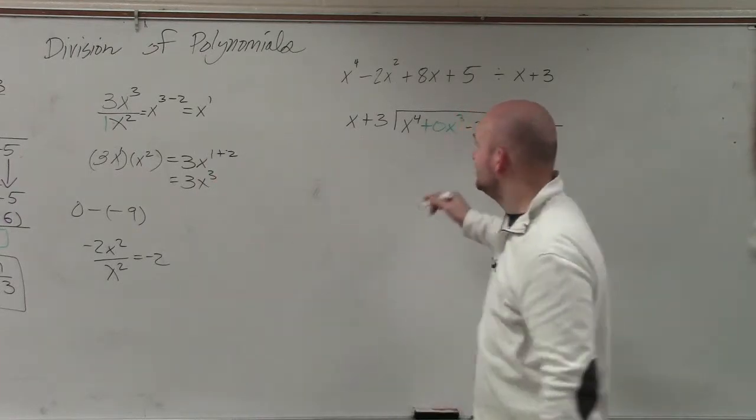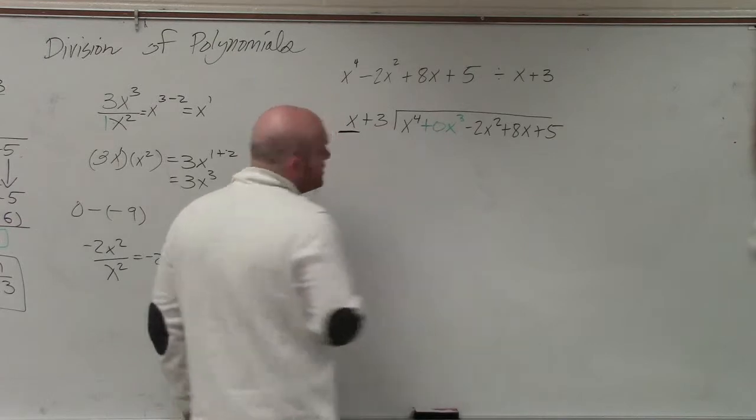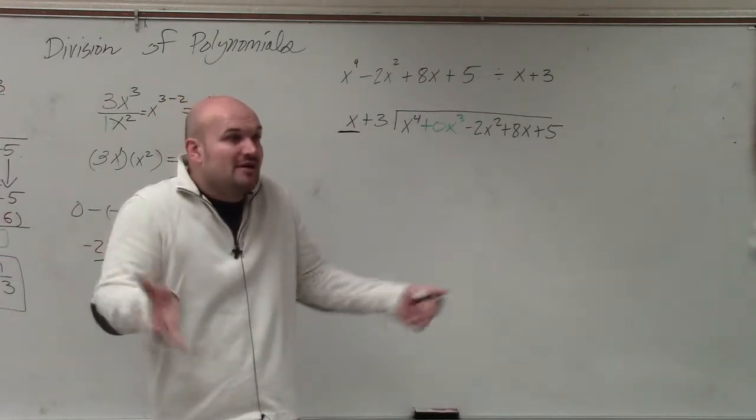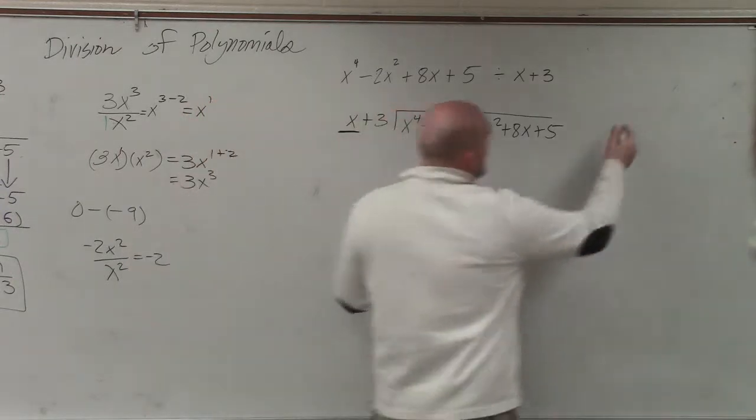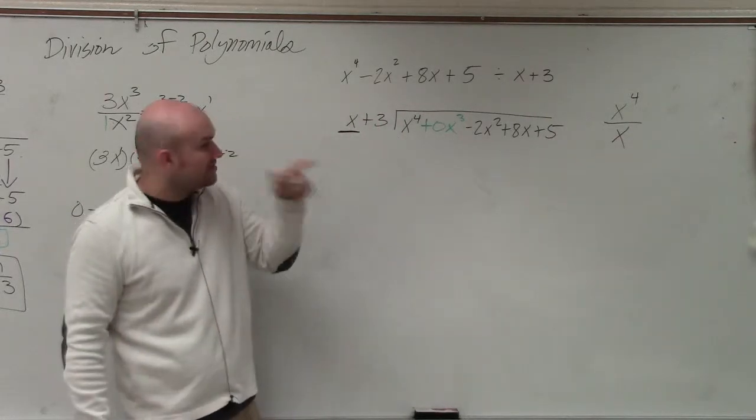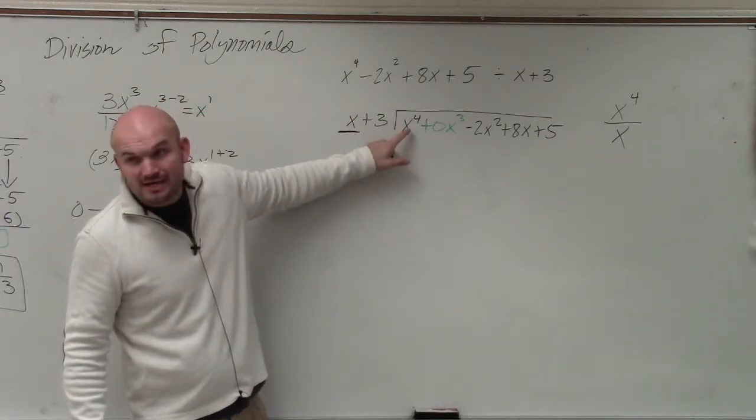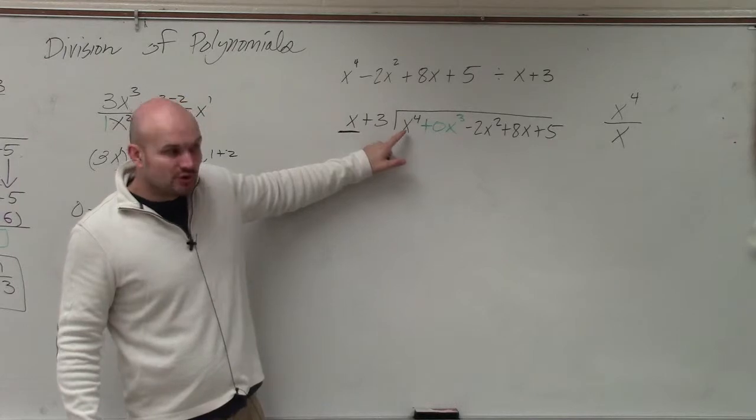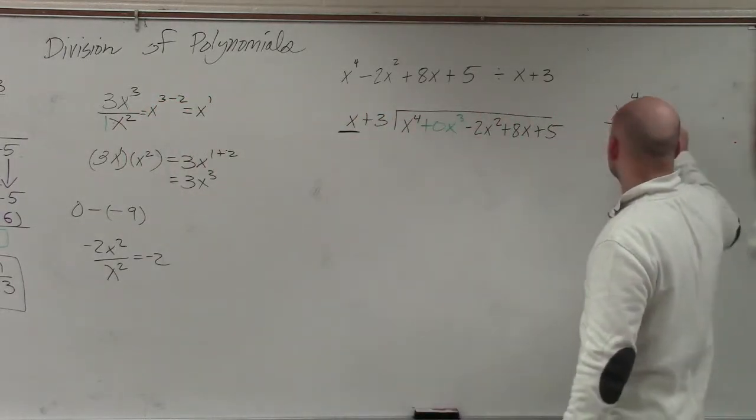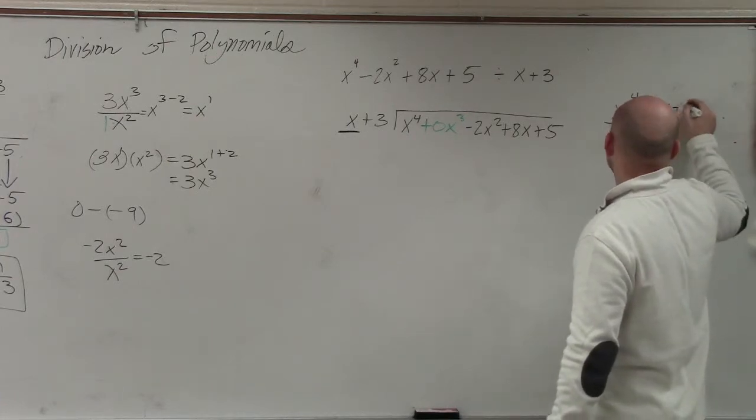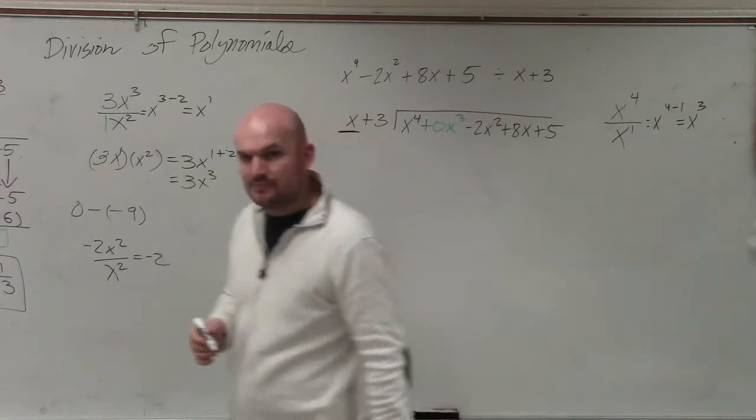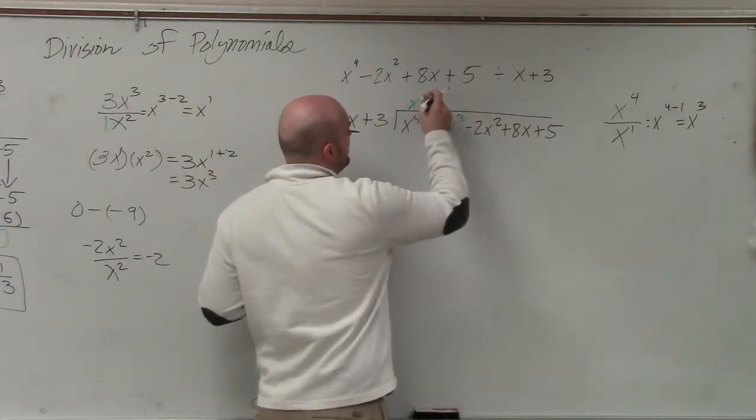Same thing. We take the first term and we divide into it. And again, if you can't figure this out, guys, put this to the side. How many times does x divide into x to the fourth? Remember the rules of exponents. When you have exponents, you subtract the powers. x to the fourth minus 1 is equal to x to the third. So therefore, you write x to the third up here.